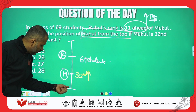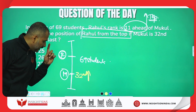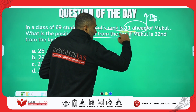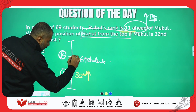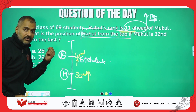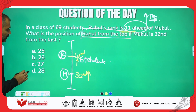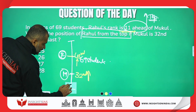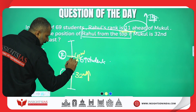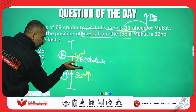Mukul comes at the 32nd position from the last. If Mukul is 32nd from the last and Rahul's rank is 11 ahead, then Rahul has to be 43rd from the last — 11 ranks ahead means 43rd from the last. Now we have to find Rahul's position from the top. In a class of 69 students, if Rahul's rank from the last is 43rd, then from here to here there are 43 people including Rahul.